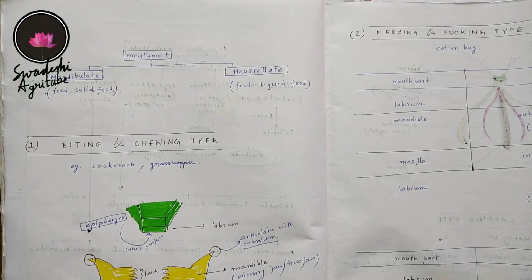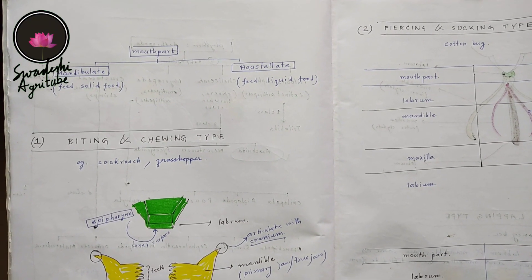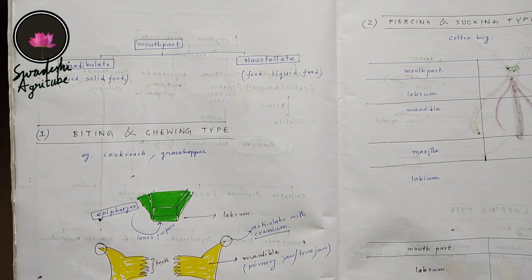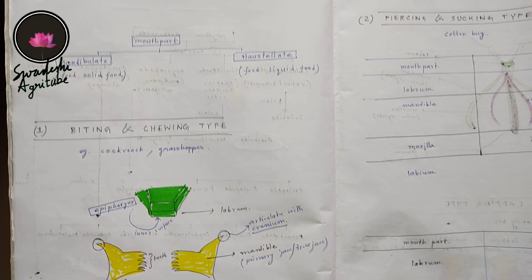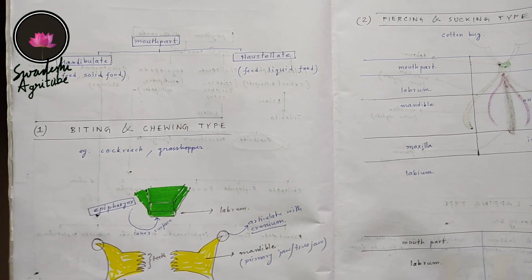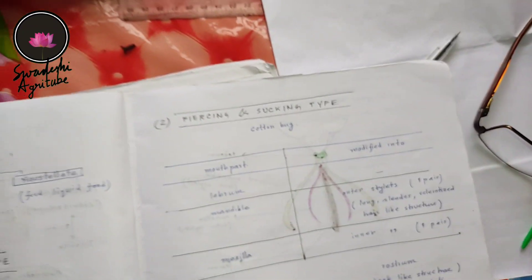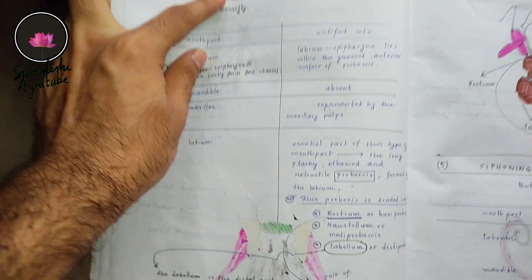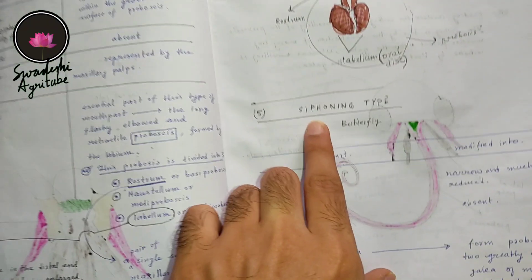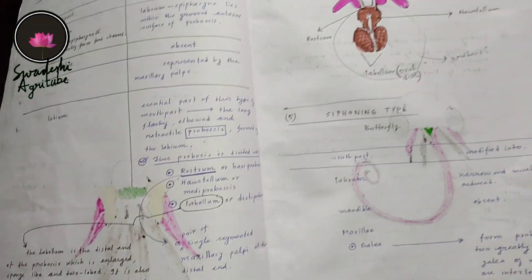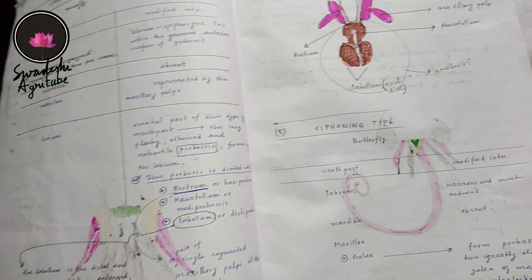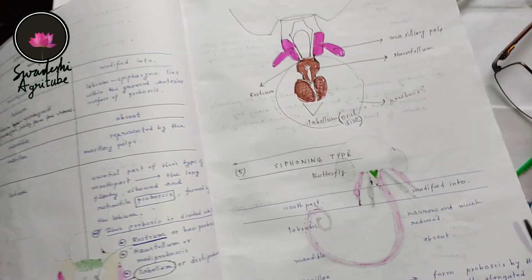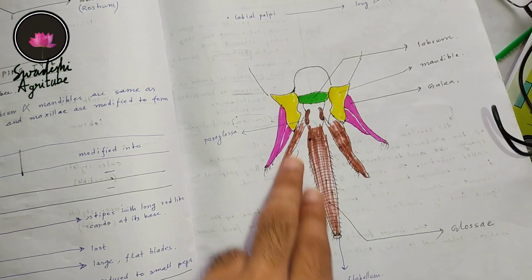Namaskar. In this series I will discuss about the mouthparts of insect pests and I will discuss the modification of the mouthparts. As we all know there are different types of mouthparts: biting and chewing type, piercing and sucking type, chewing and lapping type, sponging type, and siphoning type. All are different because of the modification of the mouthparts.